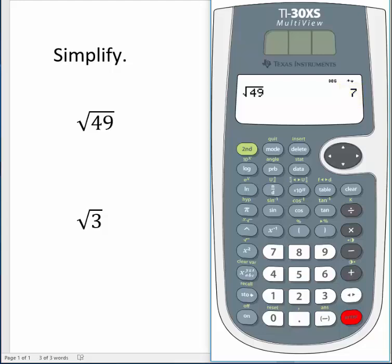You may remember that the square root of 49 is asking us what number times itself is 49. So it makes sense that the answer is 7, because 7 times 7 is 49. So the square root of 49 is 7.